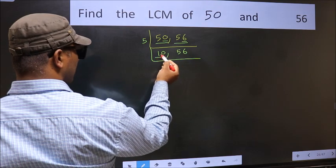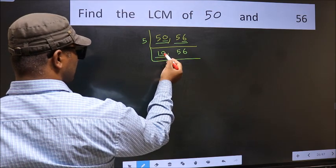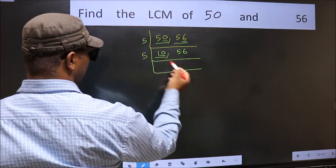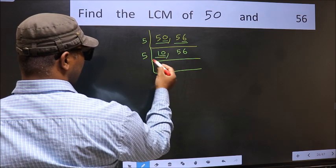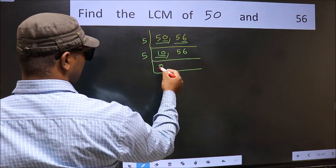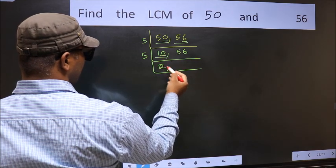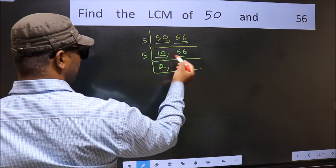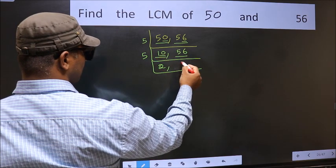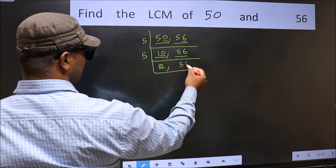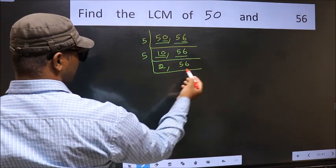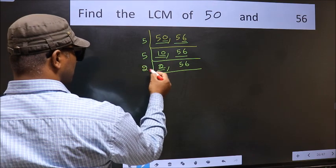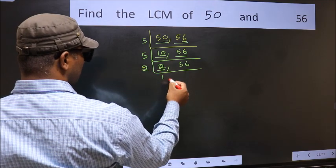Now here we have 10. Last digit is 0, so take 5. When do we get 10 in the 5 table? 5 twos are 10. The other number 56 is not divisible by 5, so we write it down as it is. Now here we have 2. 2 is a prime number, so 2 ones are 2.